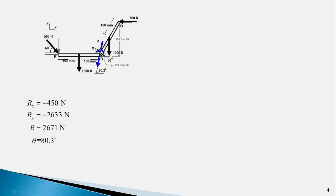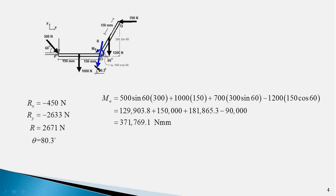The moment of the couple Mo is equal to the moment of all the forces about point O. We therefore split the forces into their x and y components to find their moments. The horizontal component of the 500 N force passes through O and therefore has zero moment about O. The vertical component of the 500 N force is 500 sin 60 and produces an anti-clockwise moment about point O, with moment arm equal to the distance PO which is 300 mm.